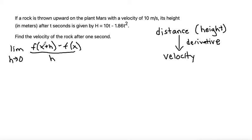In order to plug our function into this limit, we need to first find the function of x plus h. So let's come to this side and plug in t plus h because the function variable is t in this case. H(t+h) would be equal to 10(t+h) - 1.86(t+h)². The reason I'm doing this to the side is so that I can simplify it before I plug it back into my formula.